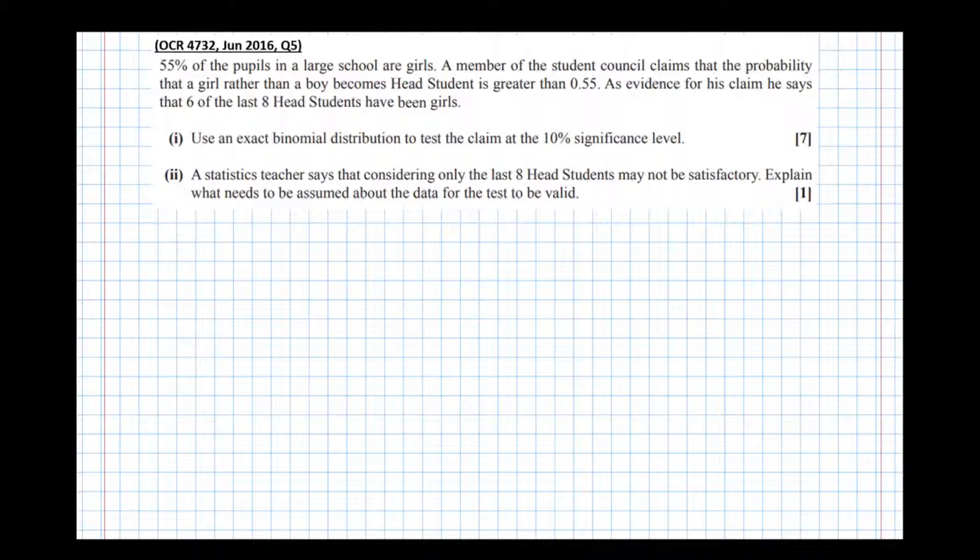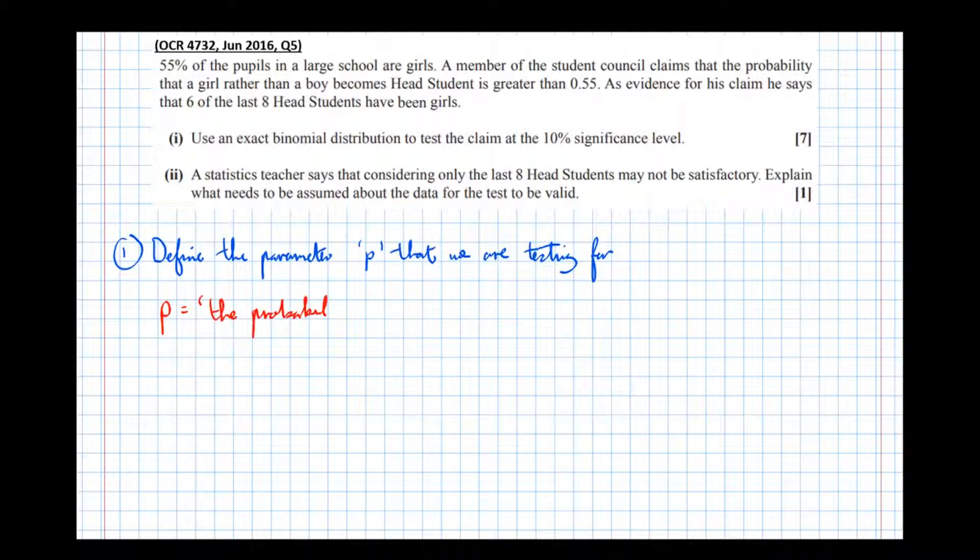So in order to get marks in these hypothesis tests, you need to do all of these things that I'm about to write down. Step one is define the parameter p that we are testing for. So anything I write in red here is going to be worth marks. So p is the probability a girl will become head student. And that in an exam is usually worth a mark. So I'm just going to put a tick next to it to remind you. If you don't write this, you usually don't get the mark.